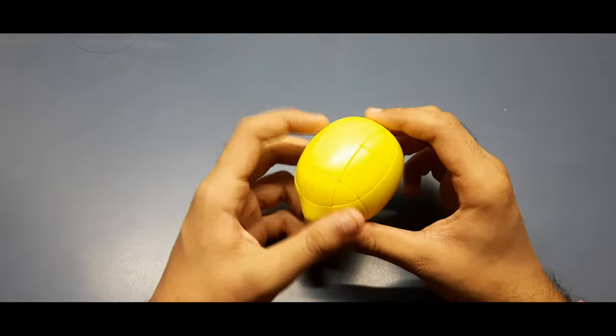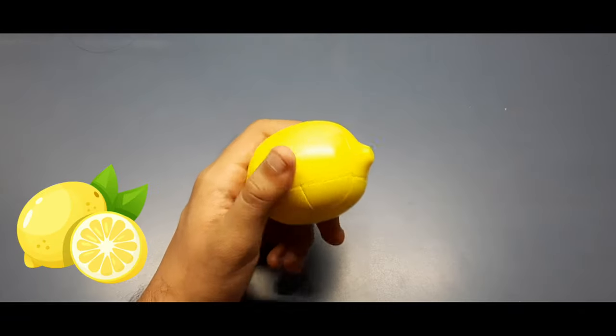So it has been a very long time since I've made a tutorial. So yeah, I'm back with the tutorial video and this time I have a shape mod of 3x3. That is the lemon cube.